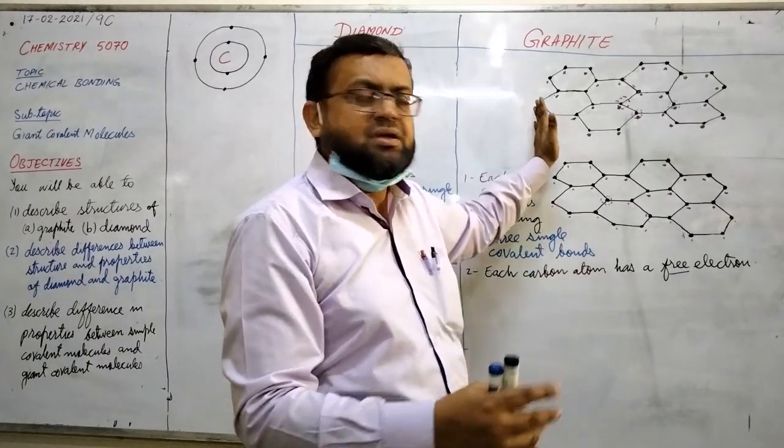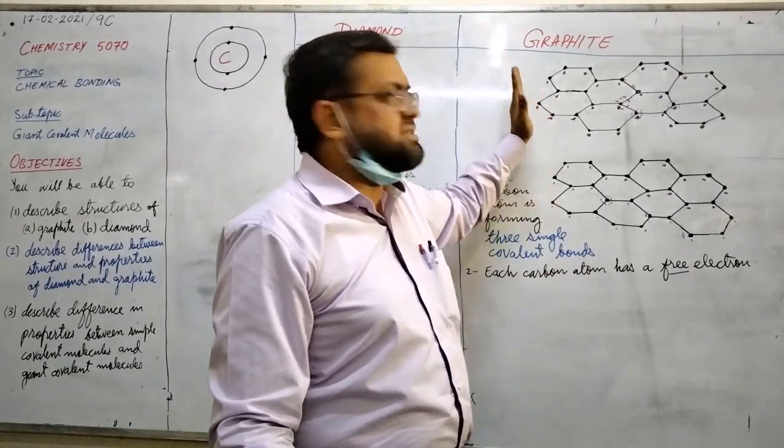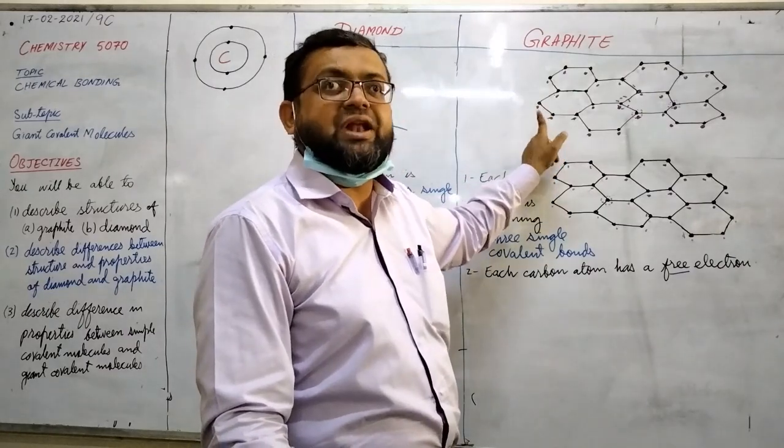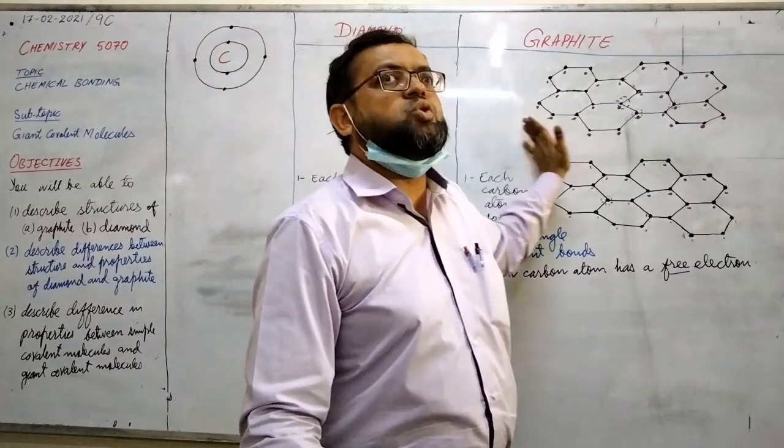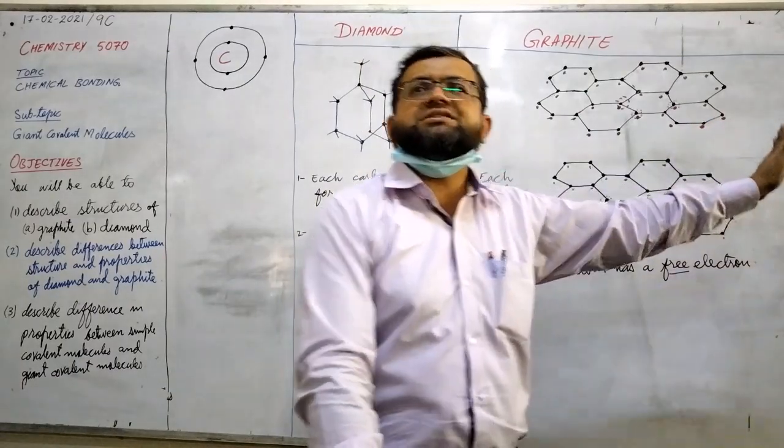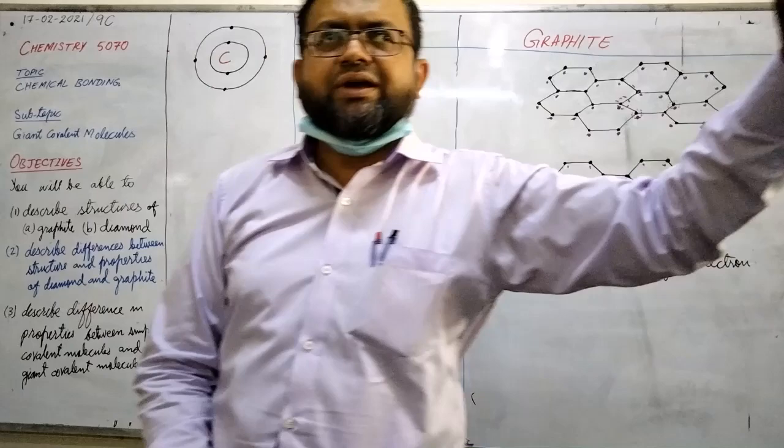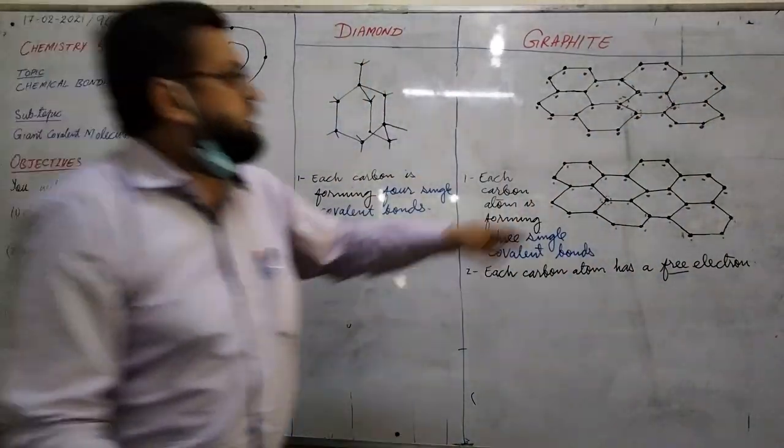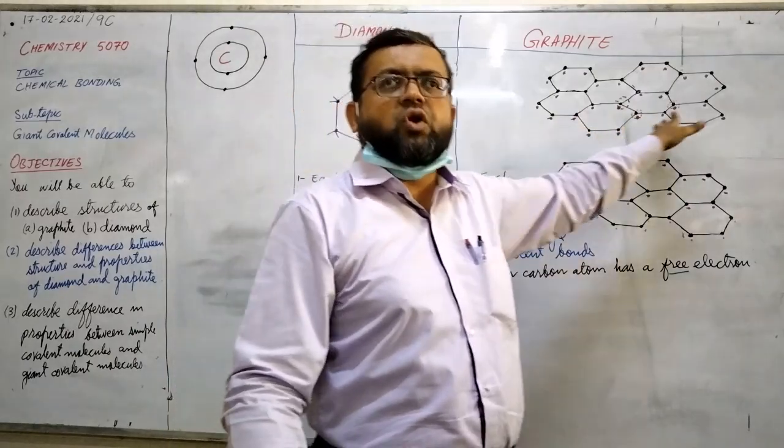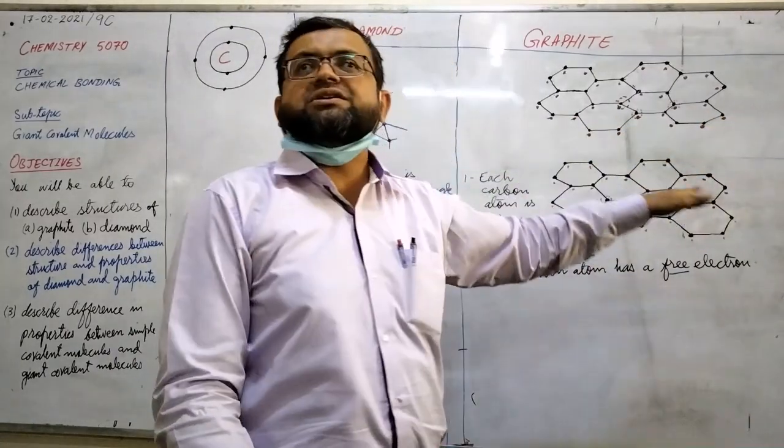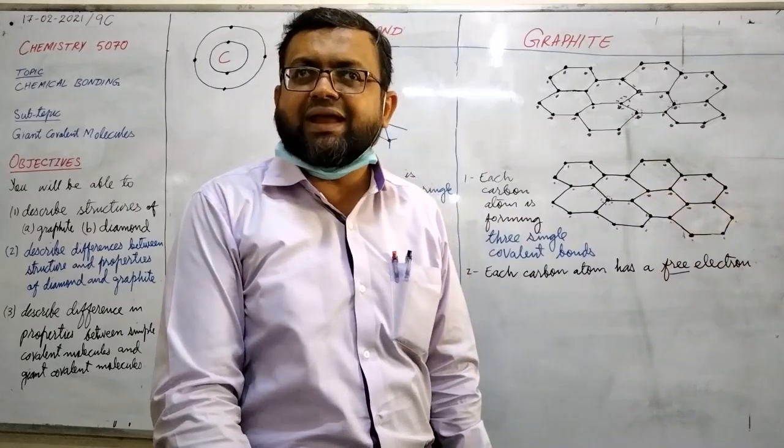But if it is connected with an electrical device, electrodes - if it is connected with a negative terminal, then due to electron-electron repulsion, electrons will go away from here. And where will they go? They will go towards the positive terminal. So in this way, a continuity develops in the flow of electrons. That's why graphite is a good conductor of electricity.